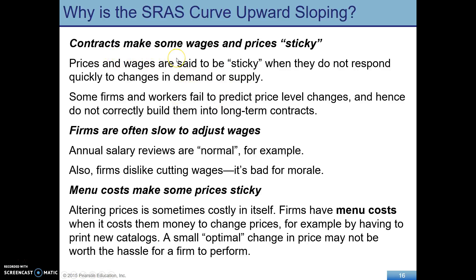Firms are often hesitant to adjust wages — nobody likes to get a pay cut. Maybe there's a labor contract: you've negotiated a salary of $50,000 good for two years. No matter what the price level does, if it rises, inflation eats into your $50,000 real wage. But if the price level falls — deflation — that's good for you because your dollar purchases more, but it's bad for the firm.